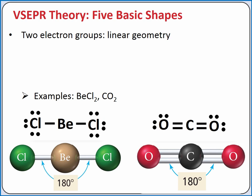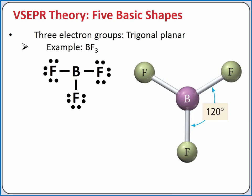Notice that in carbon dioxide, each double bond counts as just one electron group, so there are two electron groups on our central carbon atom.